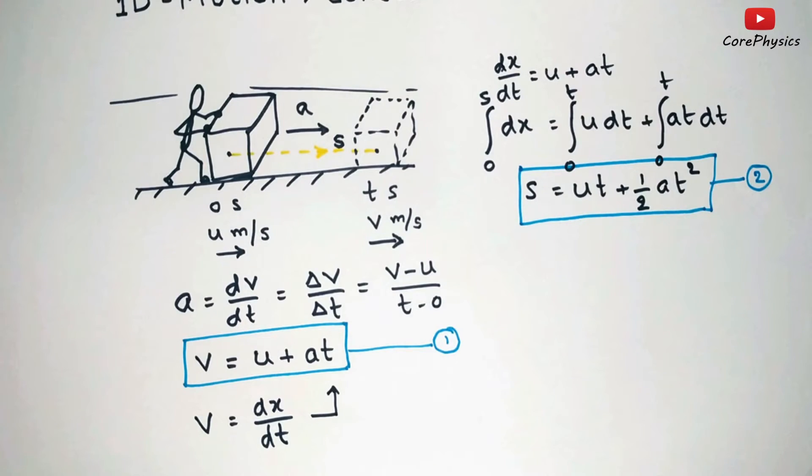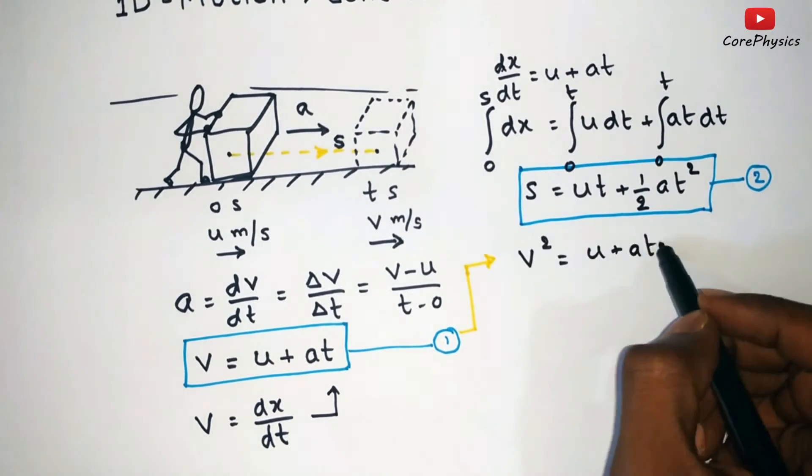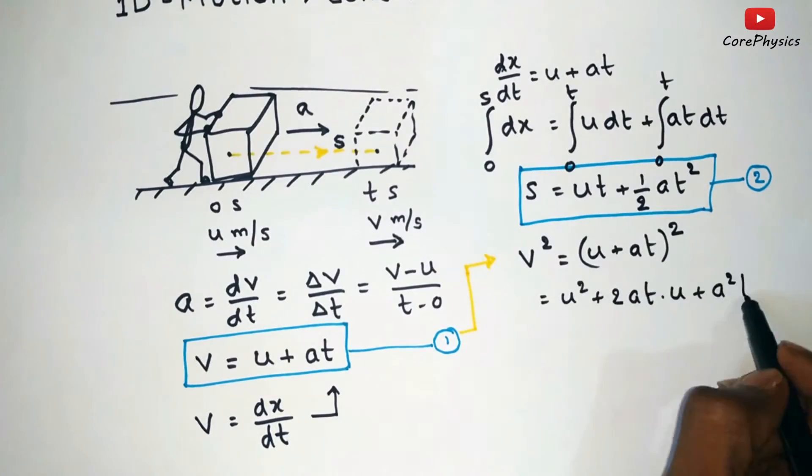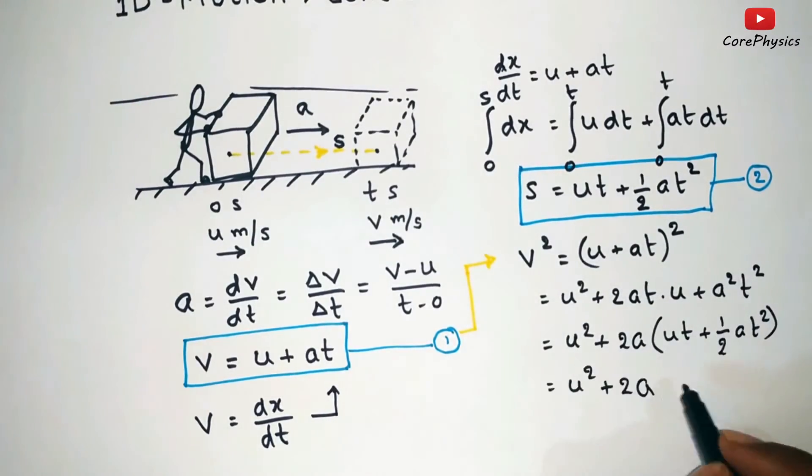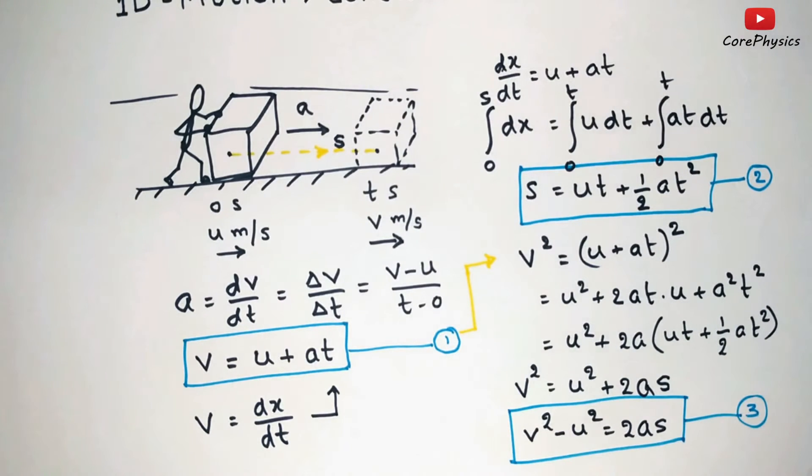And there is one more equation which we can get by squaring equation 1 and on simplifying this and using equation 2, we can get the relation v square minus u square equal to 2 as. So these three equations are called equations of motion for a straight line motion at constant acceleration.